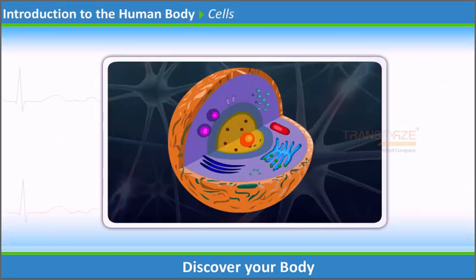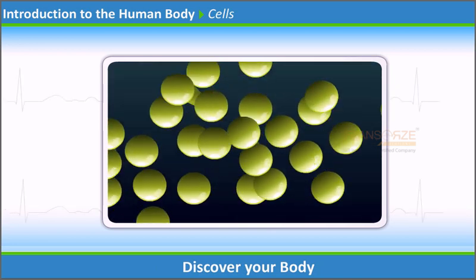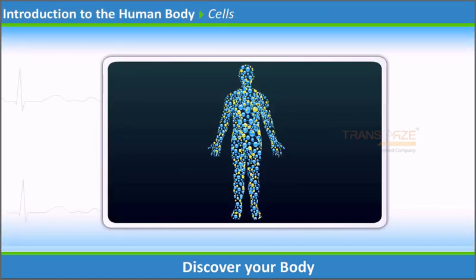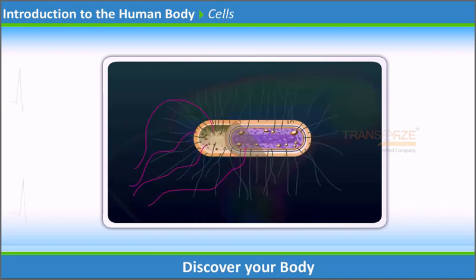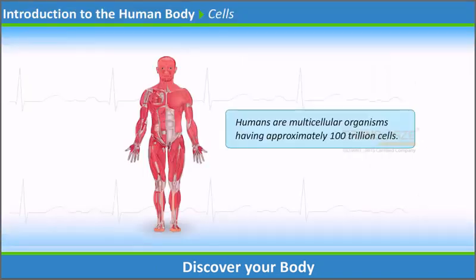Cells are the simplest units of living matter that can maintain life and reproduce themselves. The human body is made up of numerous cells. Organisms like bacteria have only one cell in their body; hence they are called unicellular organisms. Humans are multicellular organisms having approximately 100 trillion cells.